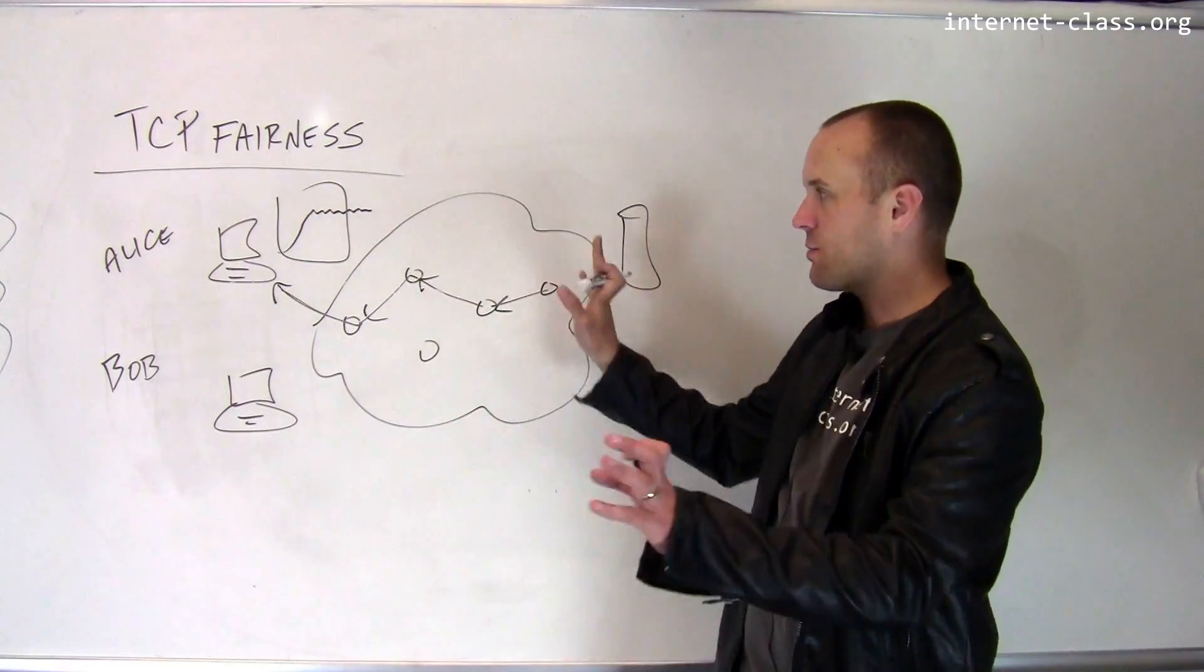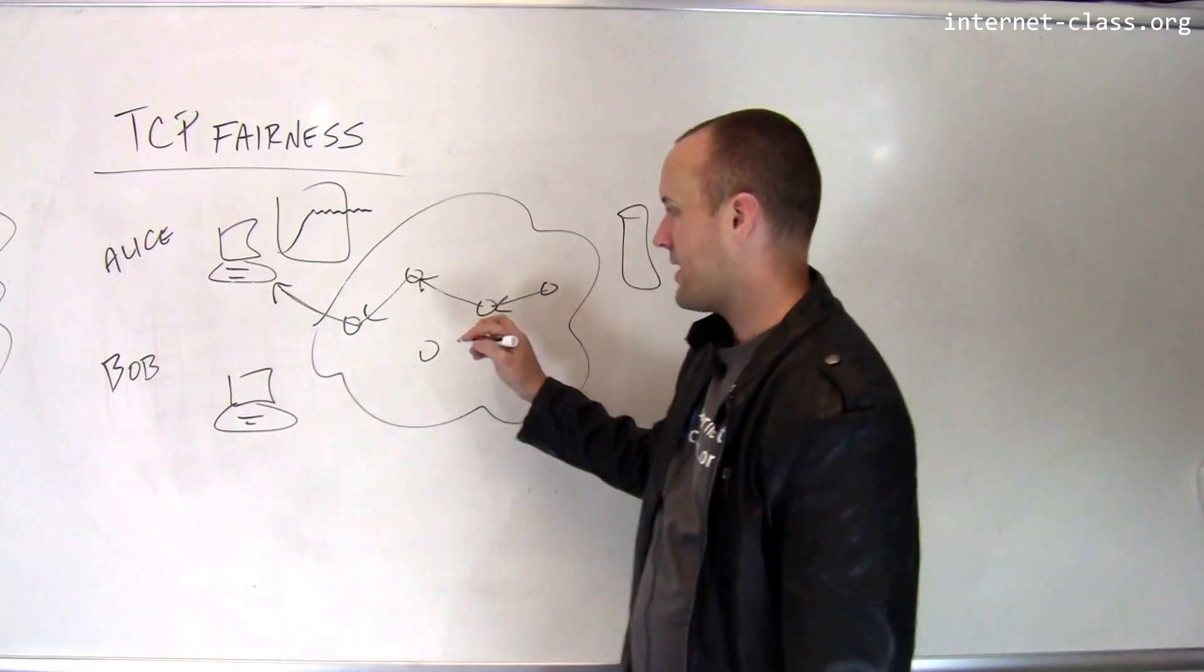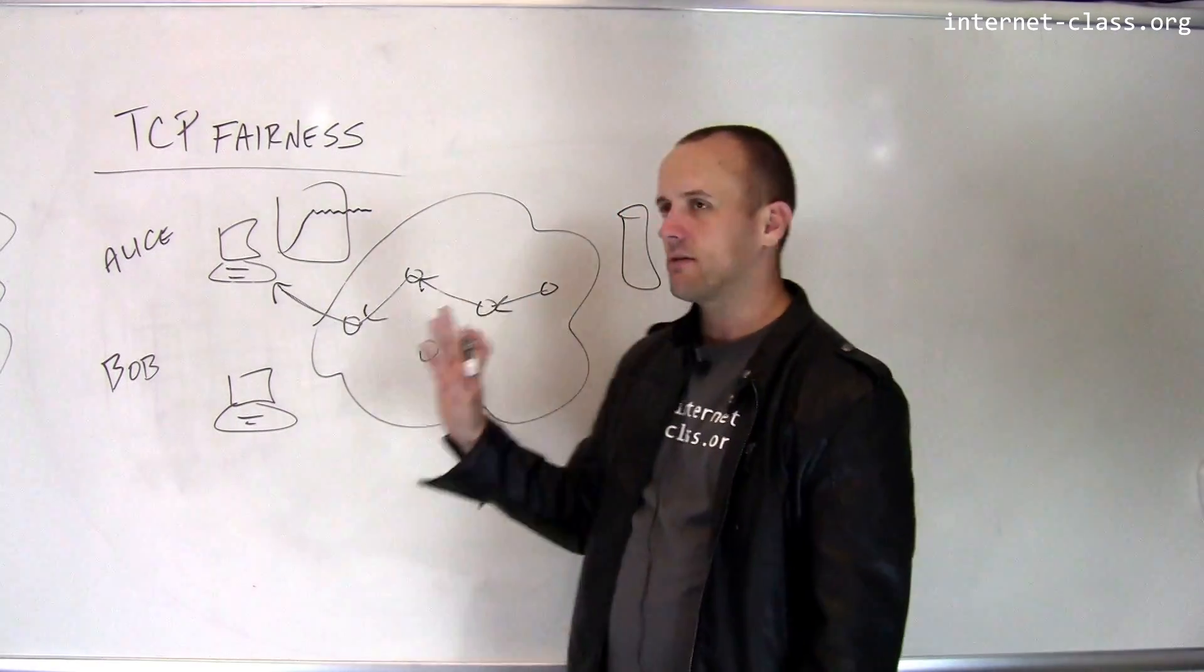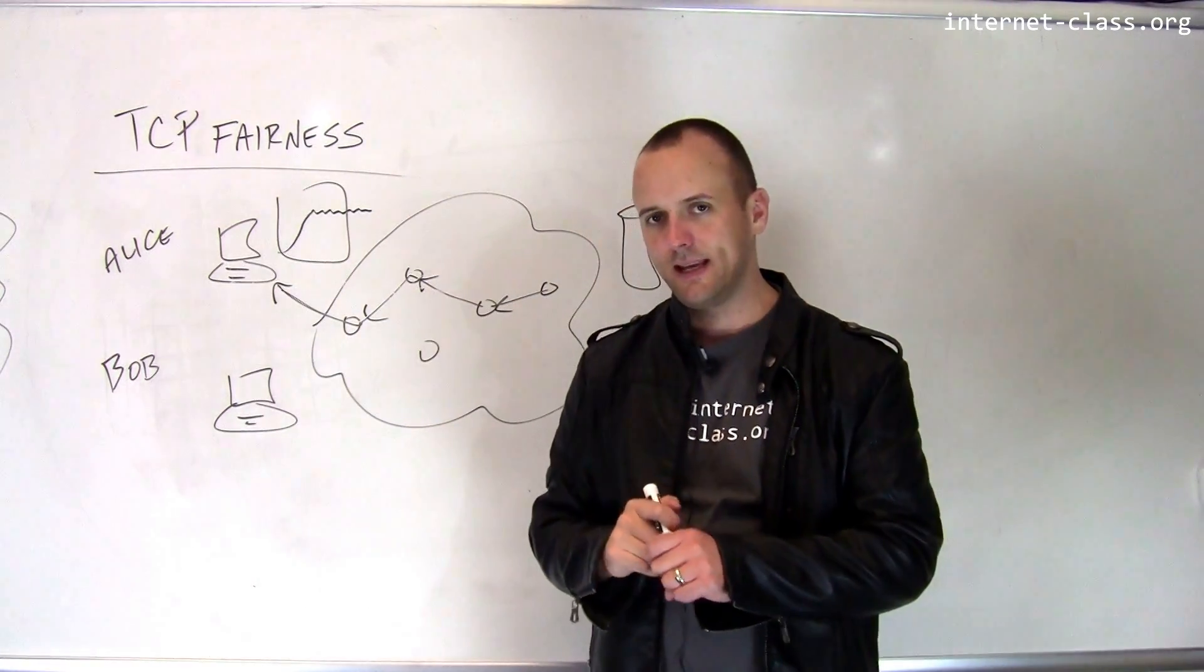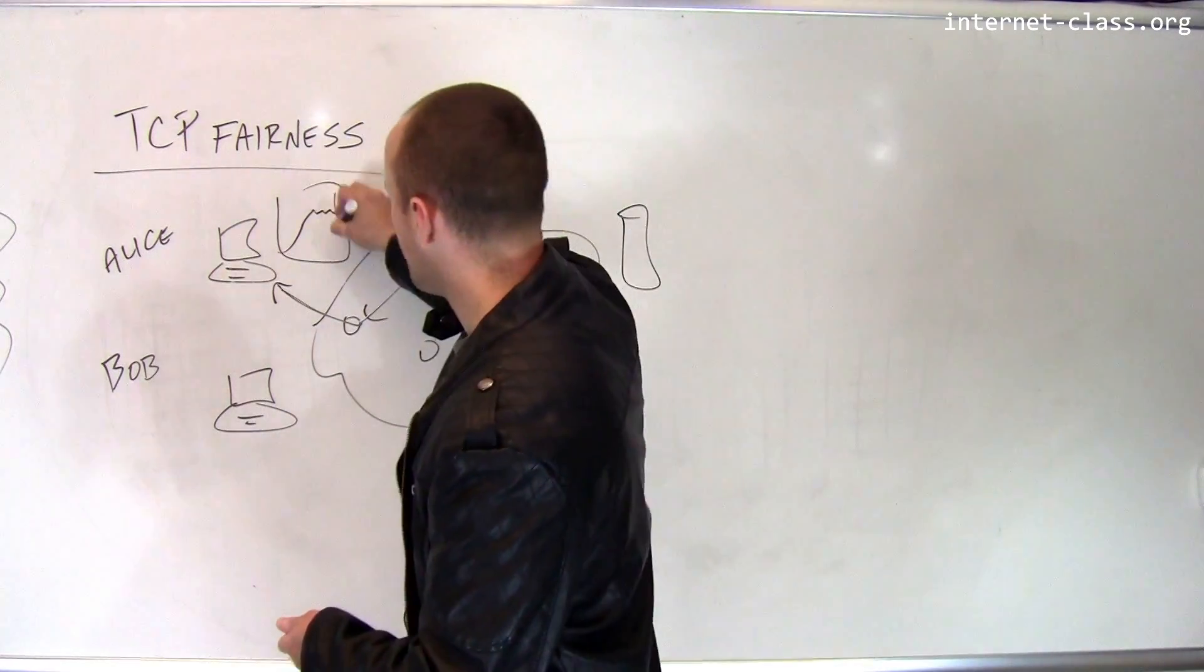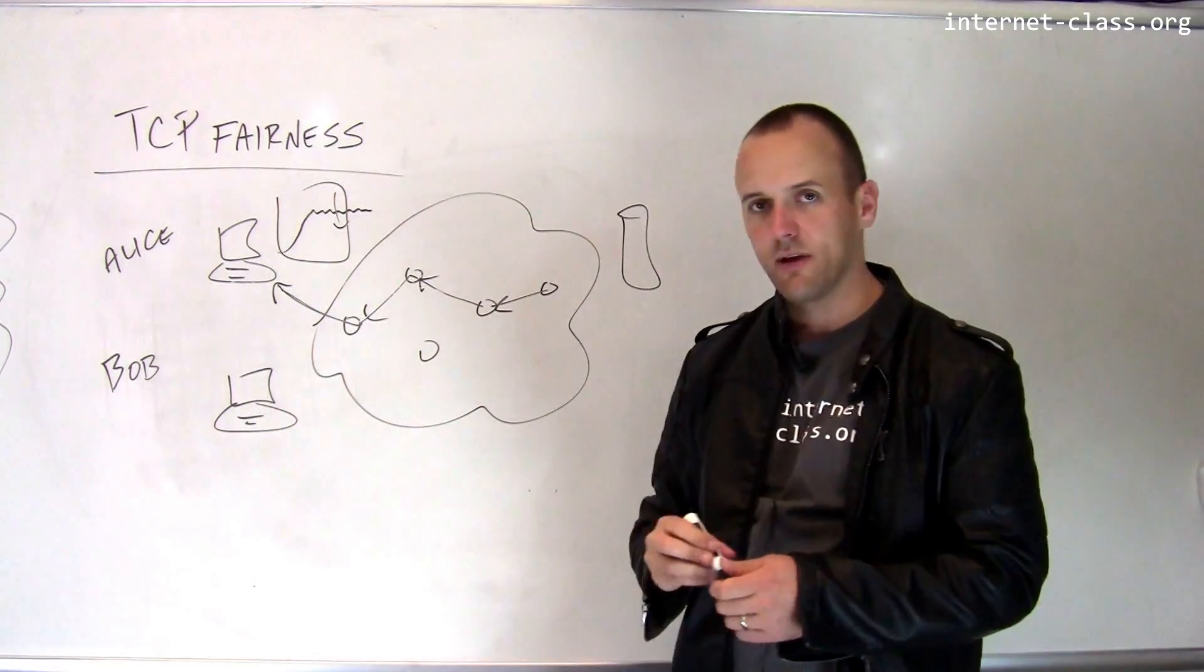So this is what happens and now Alice has found some link within the network that's her bottleneck and she's downloading content as fast as possible. Now, let's imagine at this point, later in her connection, Bob starts to download the same file.